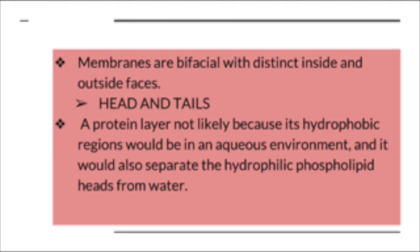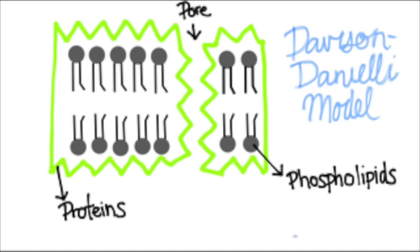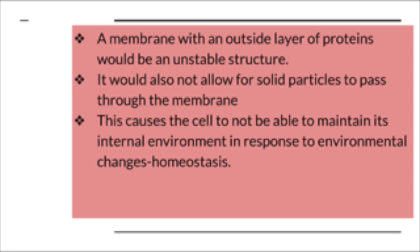A membrane with an outside layer of proteins would be an unstable structure, seeing as proteins need to be studded throughout the cell membrane. It would also not allow for solid particles to pass through the membrane, as the proteins would block such functions. All of which causes the cell not to be able to maintain its internal environment in response to environmental changes. Thus, homeostasis would not be able to occur.